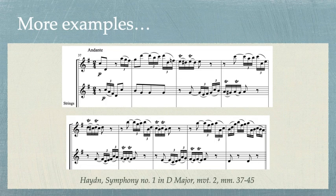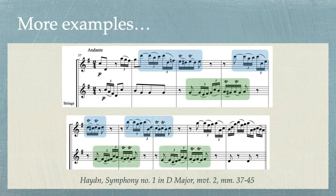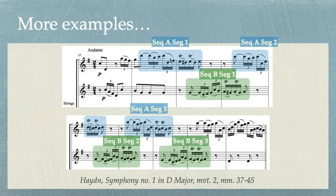Here's another example from Haydn's Symphony No. 1 in D major from the second movement. Listen for the sequences. Observe how the upper string voices sequence in tandem with one another in these measures. The melodies are different enough that they're not from the same sequence, so they need two separate labels of three segments each. Each of these sequence segments also moves down by step in both voices.